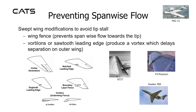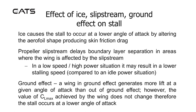Preventing spanwise flow — swept wing modifications to avoid tip stall. The wing fence prevents spanwise flow towards the tip. Vortilons or sawtooth leading edge produce a vortex which delays separation on the outer wing.